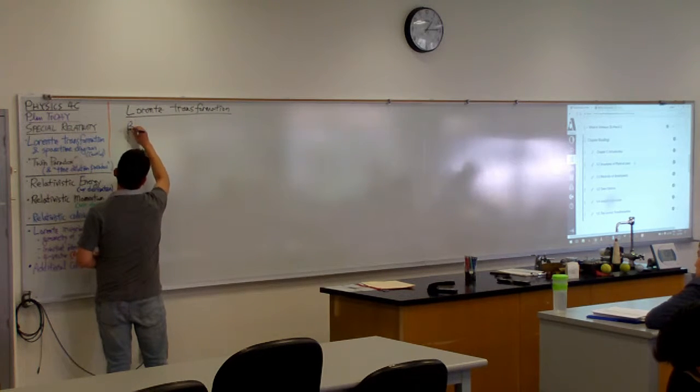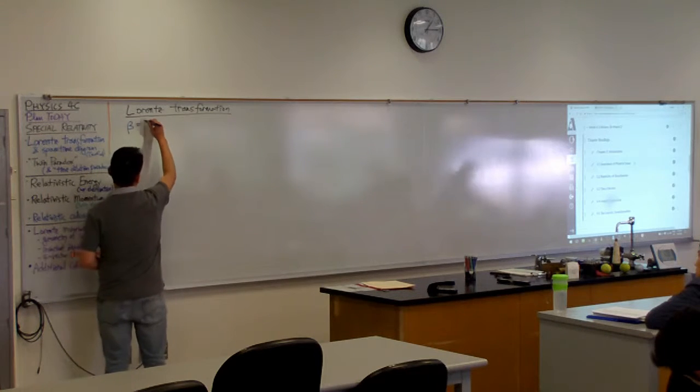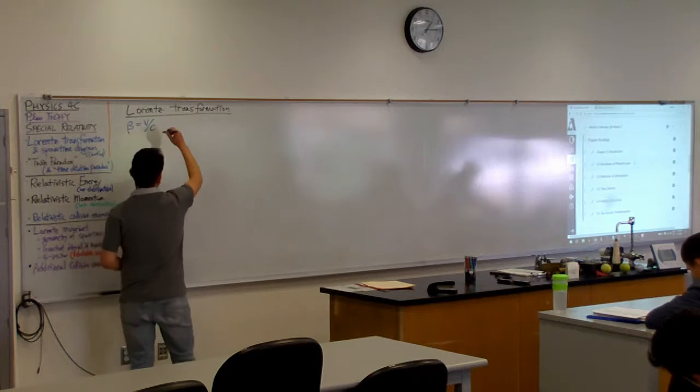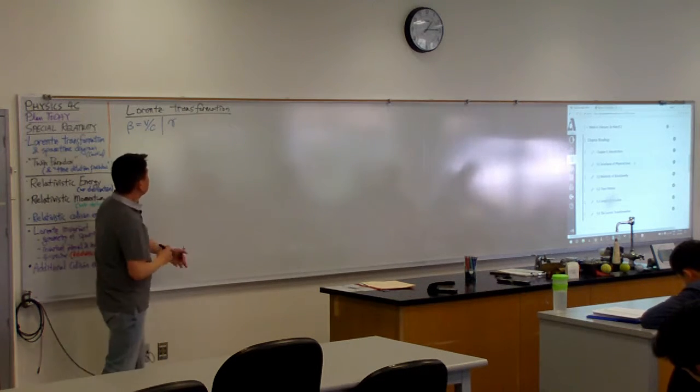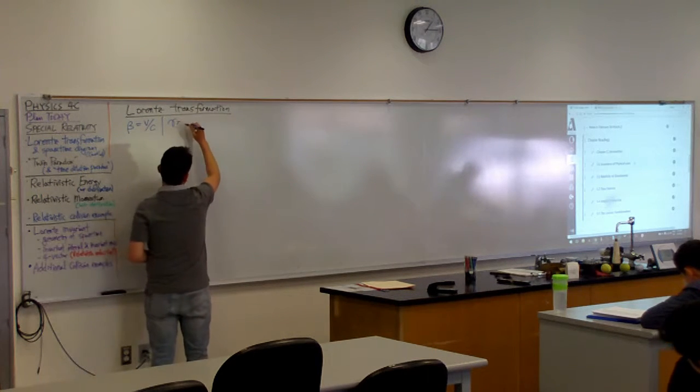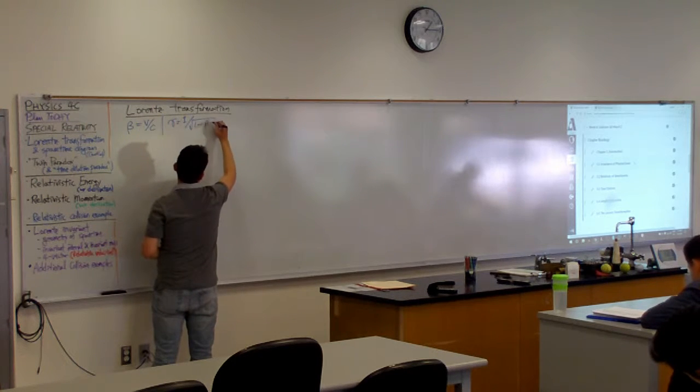So we define beta as the natural unit velocity or speed measured as a fraction of speed of light, and we introduce expression gamma that can be expressed in terms of beta is equal to one over square root of one minus beta squared.